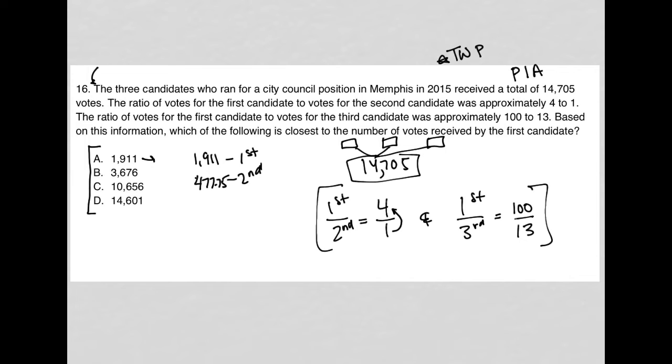And then if the first candidate received 1911, then it would be, I can use that here, 1911 over, I don't know for the third candidate, equals 100 over 13. I use my cross multiplication here to get 100x equals 1911 times 13, which equals 24,843. I divide by 100, and I have x equals 248.43. So the third candidate would be 248.43.